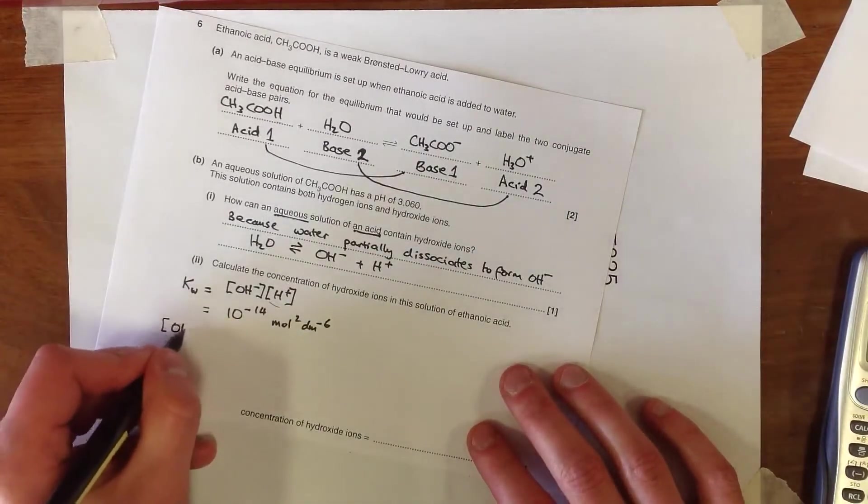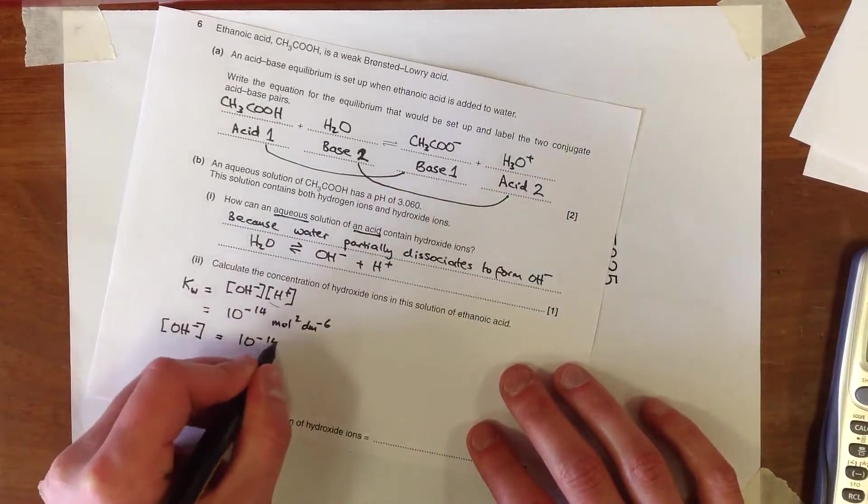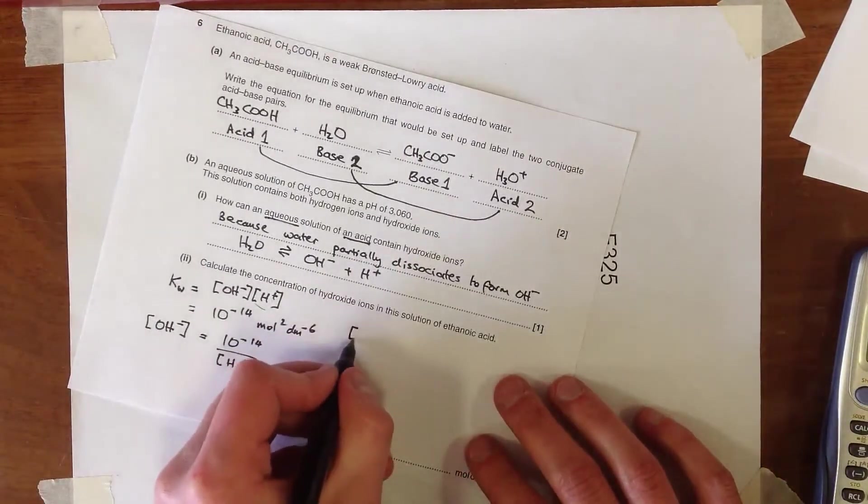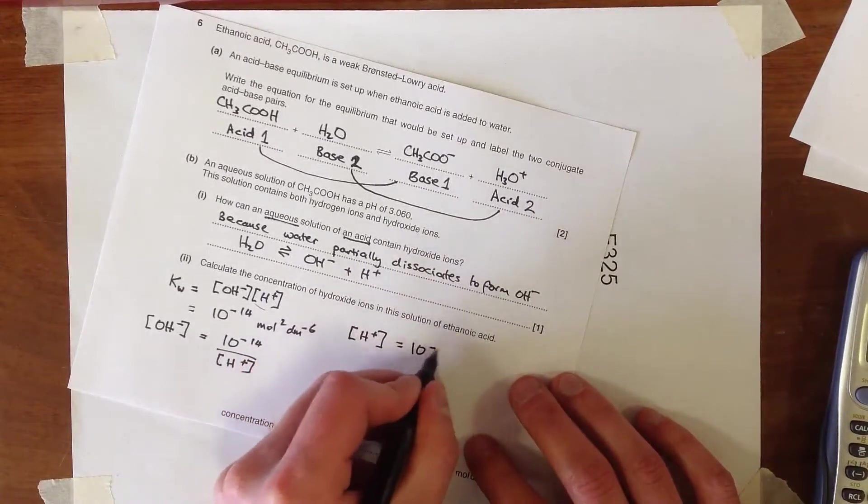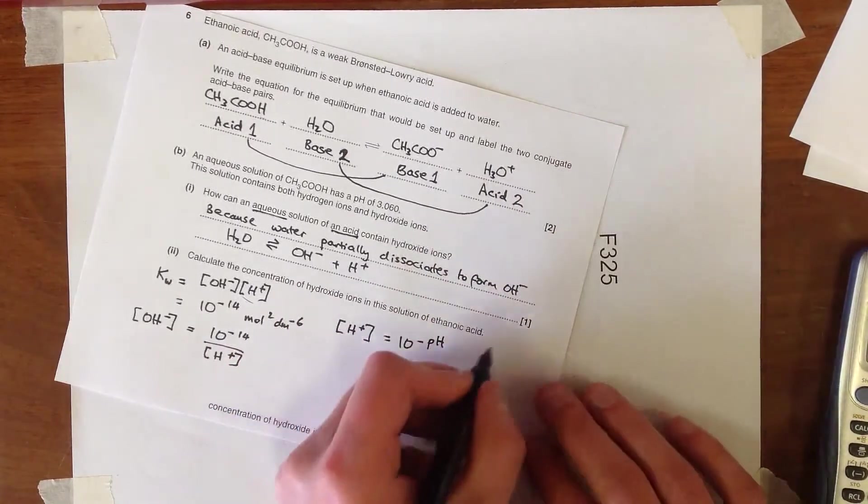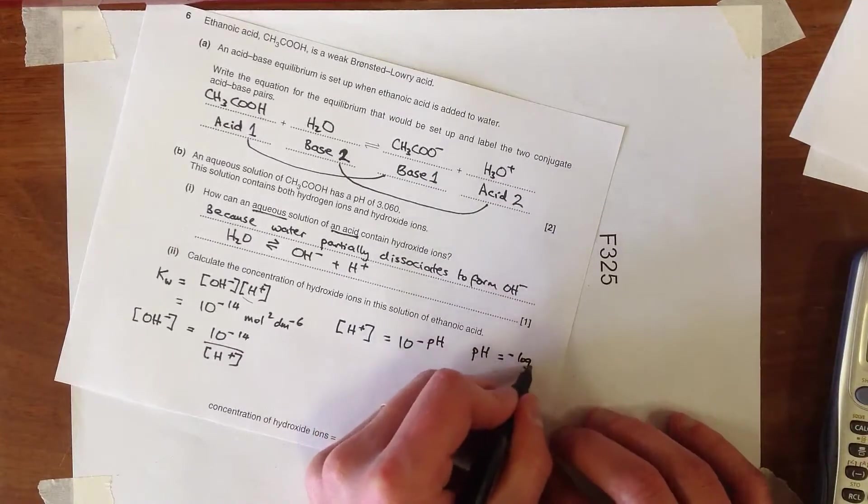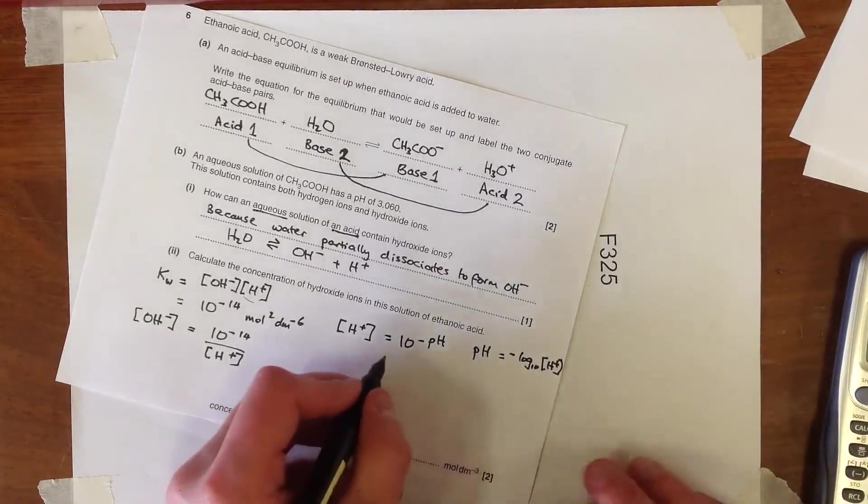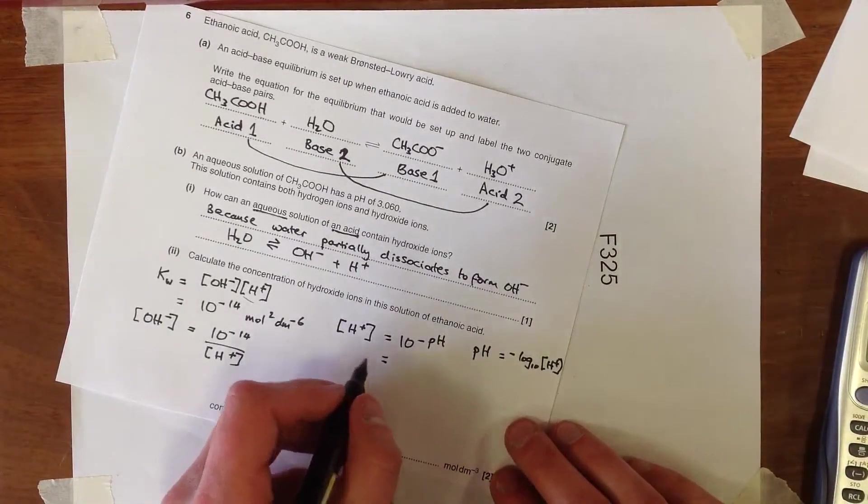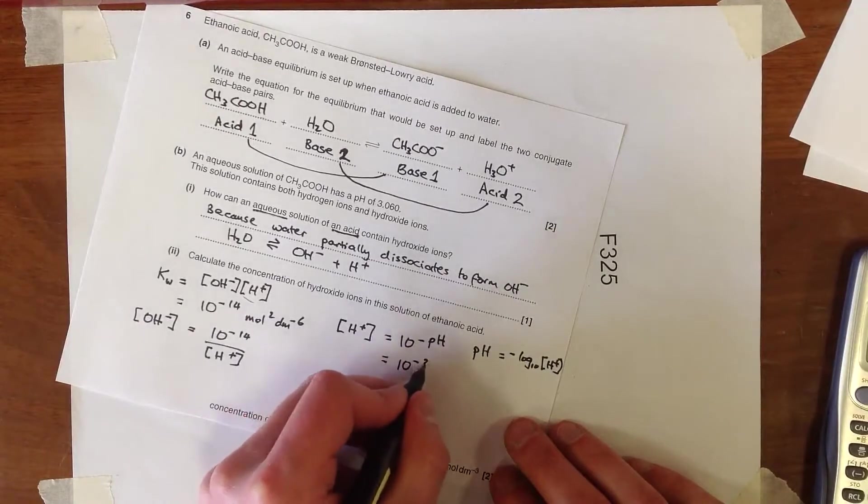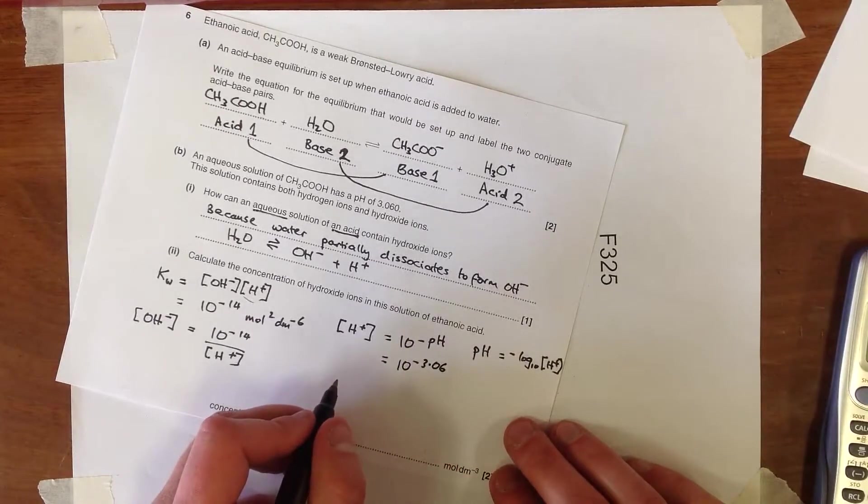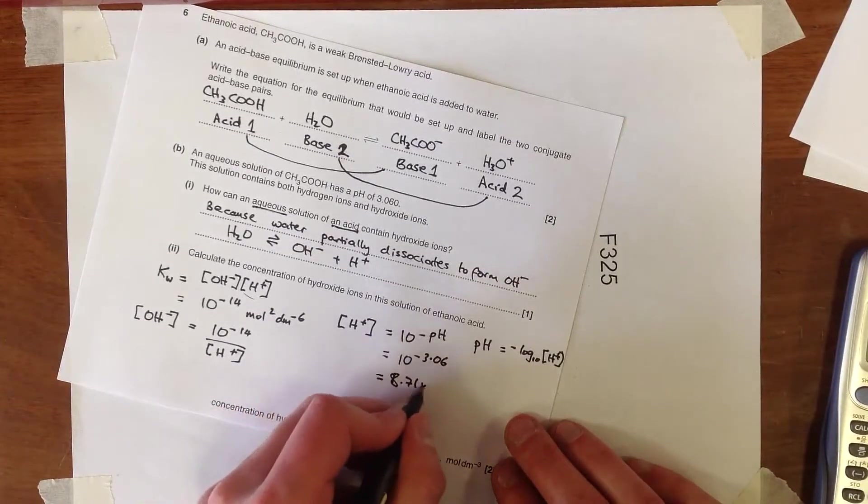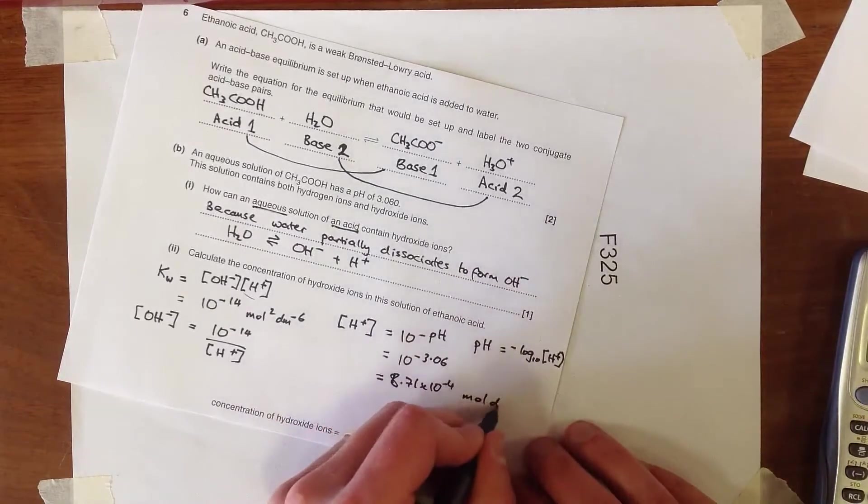So we can rearrange this to give OH- is just going to be 10 to the -14 divided by H+. And we work out the H+ concentration as 10 to the minus the pH, because our definition of pH is minus log 10 of H+. So when we work that through, we find that the H+ concentration here is 10 to the power of -3.06. And when we write that out, we get 8.71 times 10 to the -4 moles per decimetre cubed.